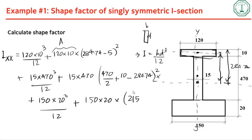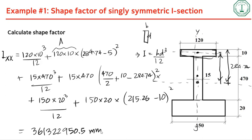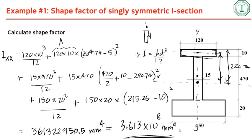For the bottom flange, the distance to the global centroid is 215.26 minus 10. Summing all contributions, you get a total I_xx of approximately 3.613 times 10 to the power 8 mm to the fourth.